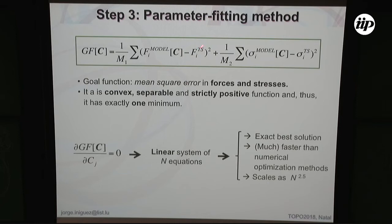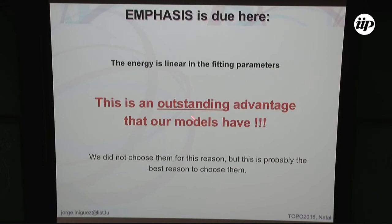This parabola is positive definite, so it has a minimum, and that minimum corresponds to my optimum choice of parameters to reproduce the training set. This means I can find parameters by simply solving a system of linear equations — in other words, by diagonalizing a matrix — which is very good news. This is an outstanding advantage: the models are linear in the parameters. For instance, this is something that many other models, like neural-network potentials, don't have.